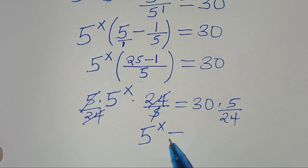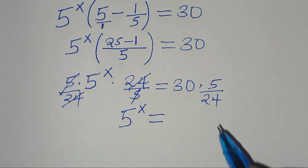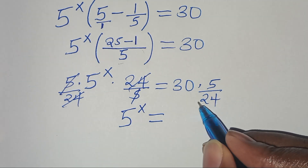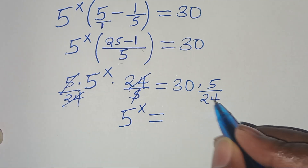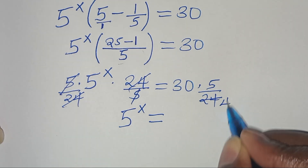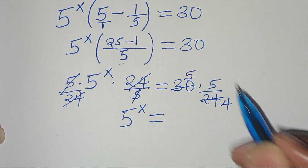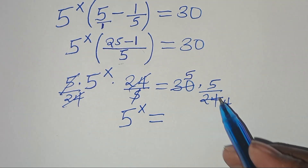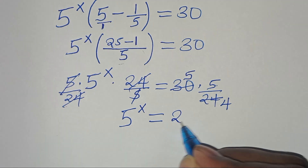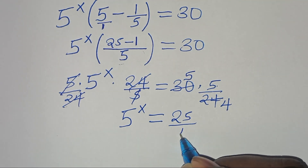This is equal to — now we can simplify here. 24 divided by 6 is equal to 4, and 30 divided by 6 is equal to 5. So 5 times 5 — this is 25 divided by 4.